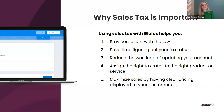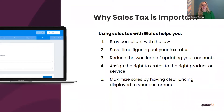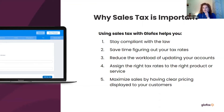Fourth — assign the right tax rate to the right products and services. You'll have the ability to assign different tax rates. For example, you can apply a ten percent tax on a membership and an eight percent tax on a product. Finally — maximize sales by having clear pricing displayed to your customers. You'll have the ability to show the price to your members both before and after tax. That's basically why sales tax is important.